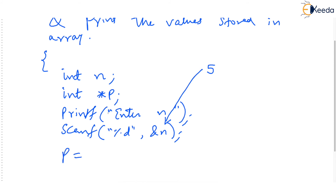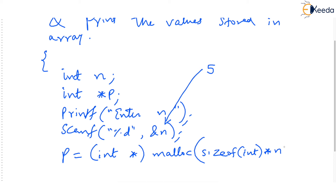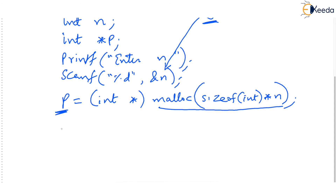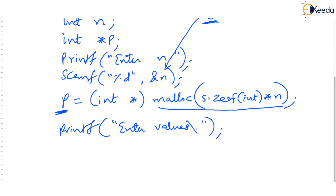First we will ask the operator to enter the value of n, and we scan the value of n with scanf %d and n. Let's say the user enters n as 5, meaning they have 5 values to store in the array. We should create an array of exactly size n — not one more, not one less. To create the array of size n, we say: p equals (int pointer typecast) malloc, then size of int multiplied by n. If n is 5, this will exactly create an array of 5 integers, and p will store the base address of that array.